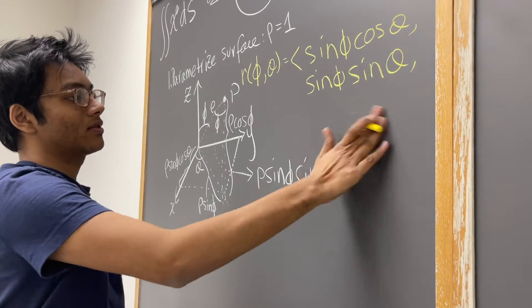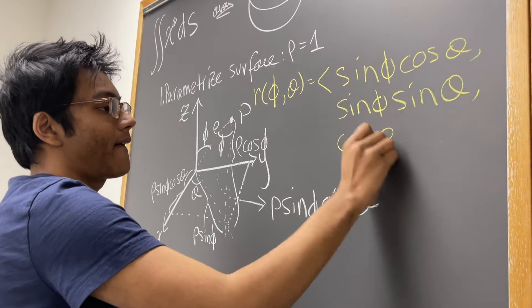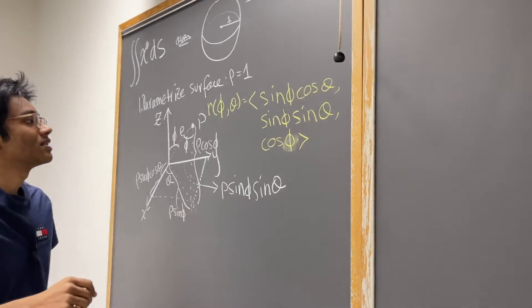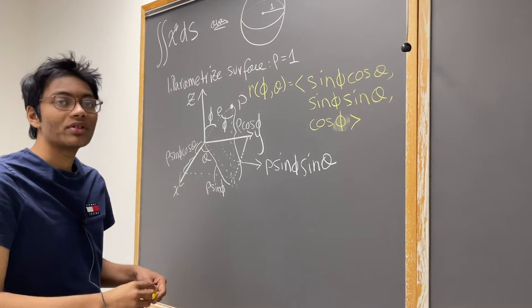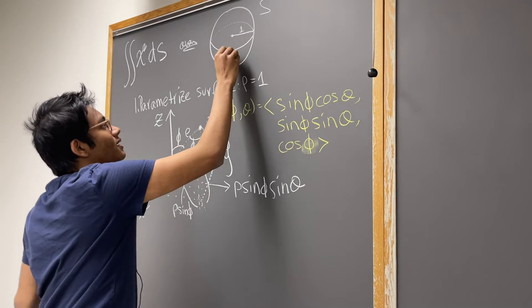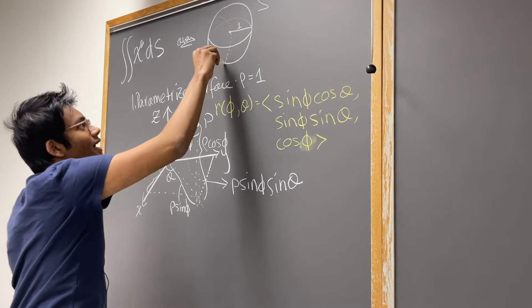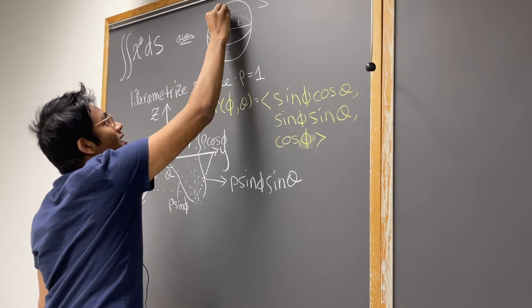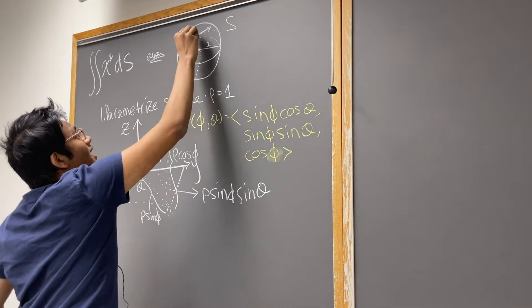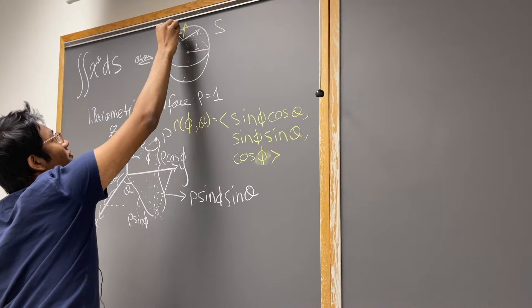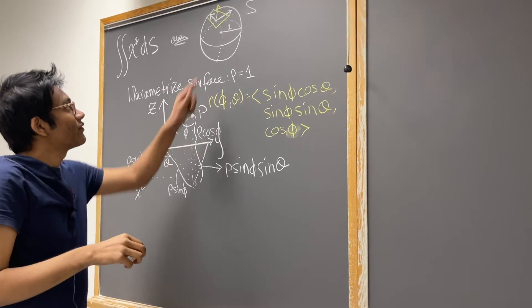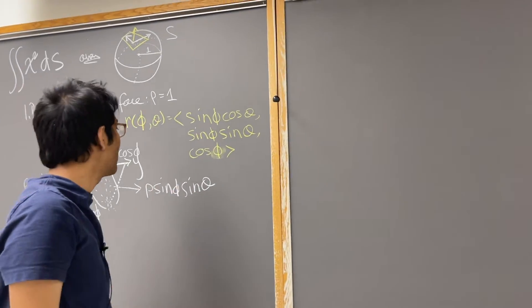So our parametrization is: x is sine phi cosine theta, y is sine phi sine theta, and z is cosine phi. Now we're going to find our two tangent vectors. If you take a little slice here and another slice, you want to find two tangent vectors, and by finding their cross product you can get the unit normal vector, which defines the tangent plane to our surface at that point.